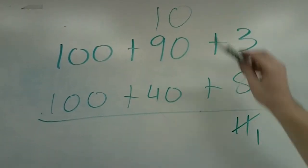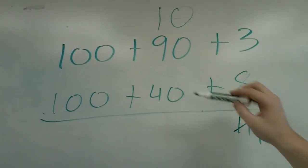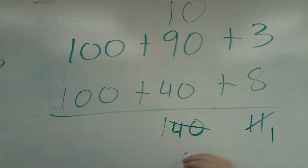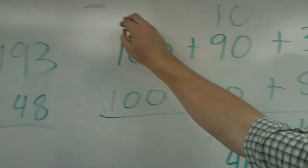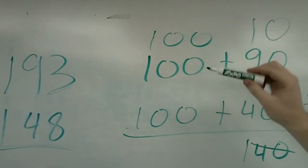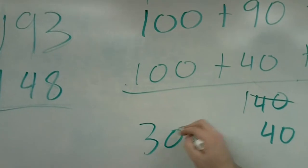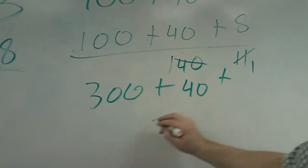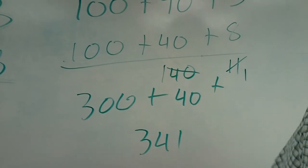Now we're going to add our tens column. 10 plus 90 is 100, plus 40 is 140. That's too large to be in our tens. We're going to make it 40 and regroup that 100. 100 plus 100 plus 100 is 300. So when we add these together we get 341.